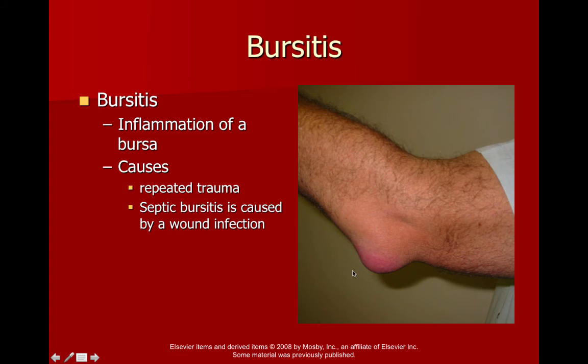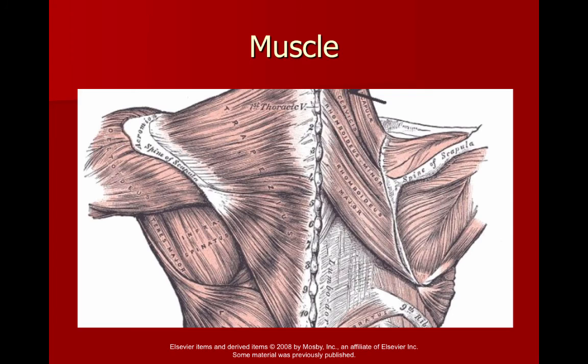Septic bursitis is when you have a wound infection and secondarily get a bacterial infection inside the bursa — that's a different story requiring antibiotics. Knee bursitis can happen from climbing stairs or crossing your legs repeatedly. Shoulder bursitis tends to be from repeated arm abduction. Mostly these are from repeated movements.